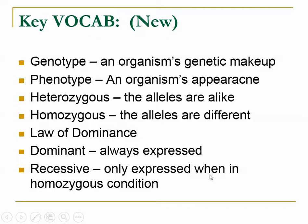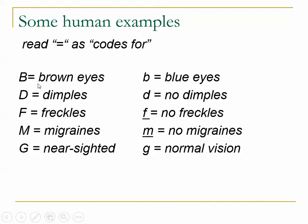It helps to apply these vocabulary words to actual situations, so let's look at some human genes. There are two common alleles for eye color in humans. The gene that codes for brown eyes is dominant over the gene that codes for blue eyes. The allele for dimples is dominant over the allele for no dimples. The gene for freckles is dominant over the gene for no freckles. Notice that all dominant genes are written as capital letters, and all recessive genes are written as lowercase letters. When doing genetic problems, I like to underline little f's and little m's so they're easy to distinguish from the capital ones.